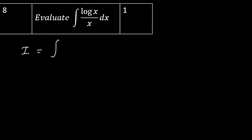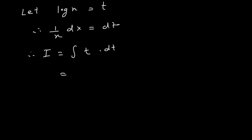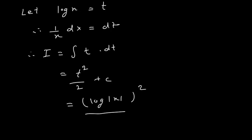I = ∫ log(x)/x dx. Let log(x) = t, so 1/x dx = dt. Therefore I = ∫ t dt = t²/2 + c. Substituting back, I = (log x)²/2 + c.